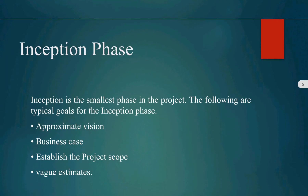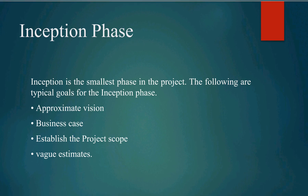The inception phase is the smallest phase in your project. The activities we do in the inception phase are: first, approximate vision is defined — what is the objective; second, business case; third, defining the scope of the project — what is the input, what is the output; and fourth, vague estimate — the rough estimate of project resources and budgets is decided in this phase.